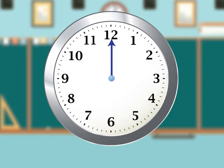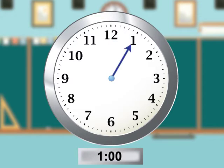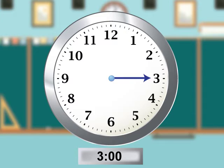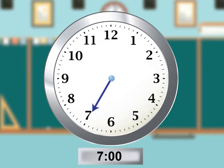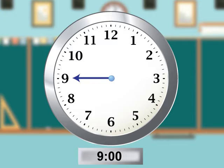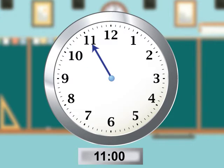Here is a tour of times around the clock using the hour hand: 12 o'clock, 1 o'clock, 2 o'clock, 3 o'clock, 4 o'clock, 5 o'clock, 6 o'clock, 7 o'clock, 8 o'clock, 9 o'clock, 10 o'clock, 11 o'clock, and back to 12 o'clock.